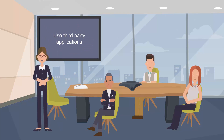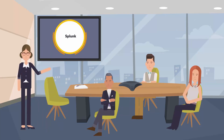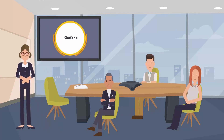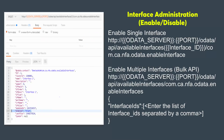You can also use third-party applications such as Splunk and Grafana to consume the APIs. The CA Network Flow Analysis REST APIs allow you to view the flow data for interfaces and perform administrative functions such as enable and disable interfaces.